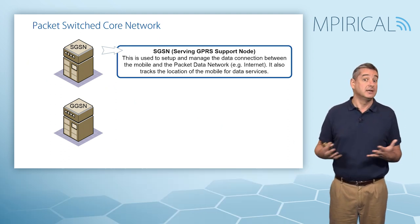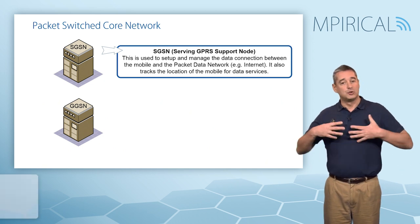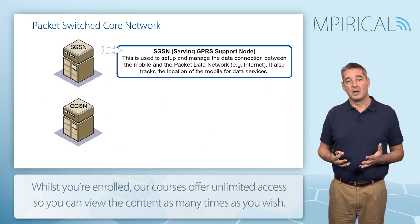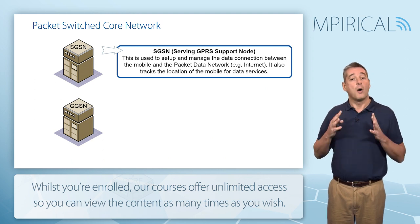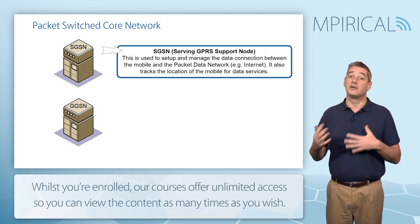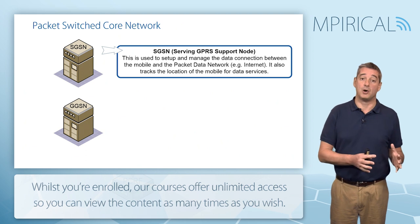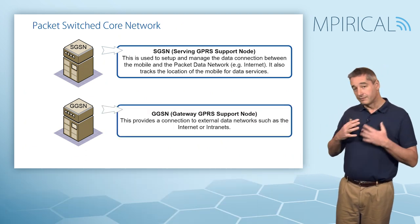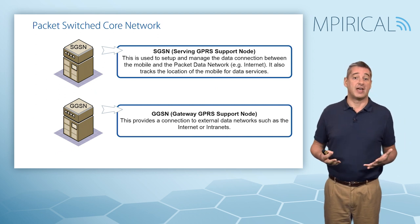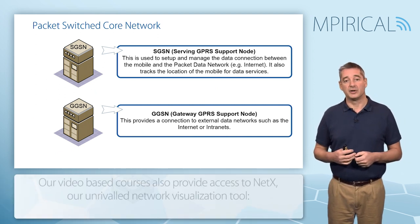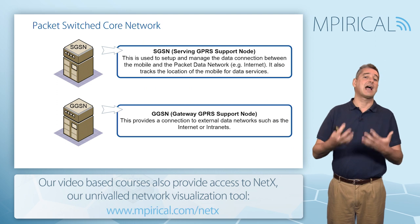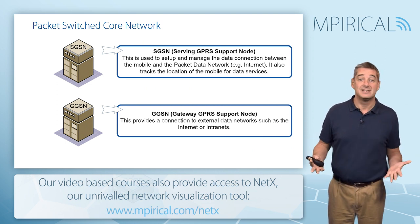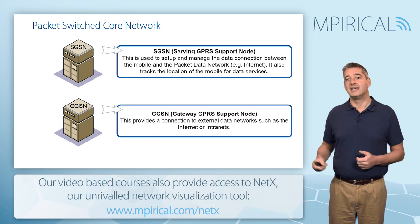The SGSN also deals with mobility management, tracking the mobile as it moves around the network for packet switch services — whereas the MSC VLR tracks the mobile for circuit switch services. The final element is the GGSN, or Gateway GPRS Support Node, which enables connection to external data networks, typically the internet but also corporate intranets.